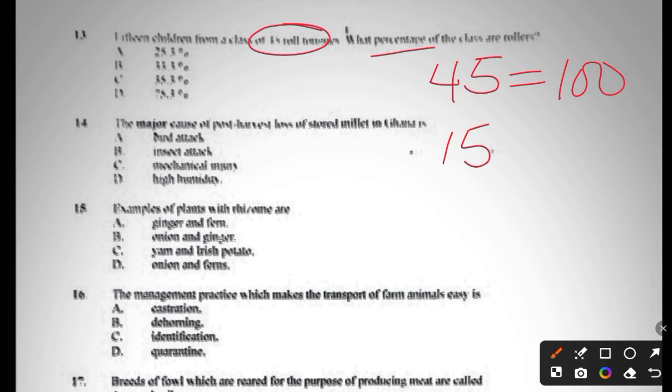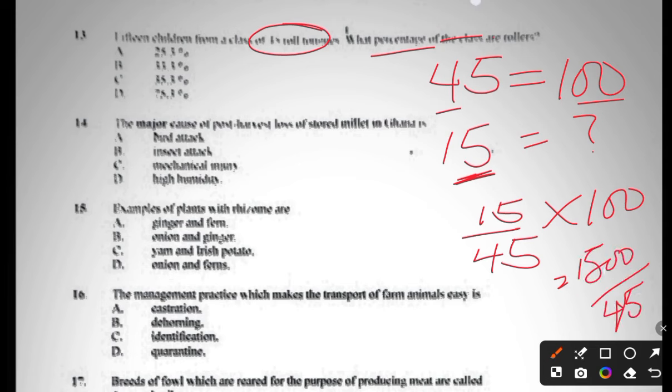Any time a question is asked about percentage, always take note that the total number of personnel involved is always equal to 100 percent. So if 45 equals 100, then 15 equals something we don't know. What do we want? We want less. If less, more divide. So 15 over 45 multiply by 100. Now 15 times 100 is 1,500 over 45. Your answer is going to be 33.3 percent.